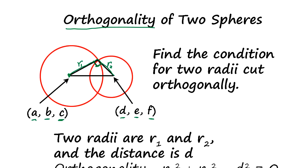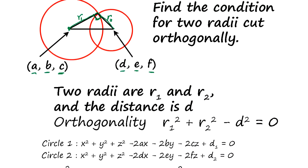So, where do we attack this problem? Okay, two radius R1 and R2, and the distance is D. Say distance is D. So since this is the right triangle, we should have this condition.